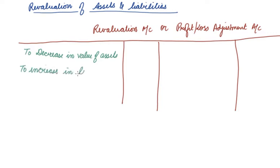Unrecorded liabilities—again, a loss for the company—debit side.